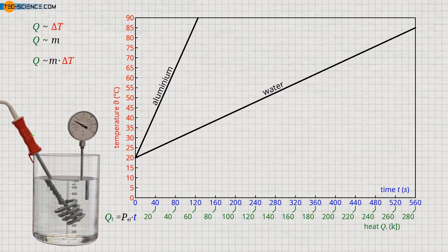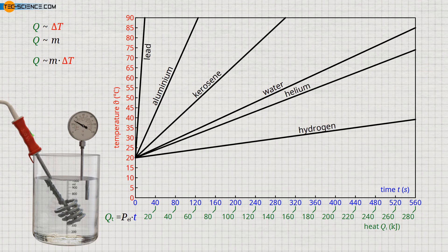If the aluminum block is twice as heavy, then twice the amount of heat must be absorbed to achieve the same temperature change. For other selected substances with a mass of 1 kilogram, the diagram shows the corresponding heating curves at a heating power of 500 watts. Thus, nothing changes in the derived relationship that the heat to be supplied is proportional to the desired temperature change and to the mass to be heated. Only the absolute amount of heat required depends on the heated substance.